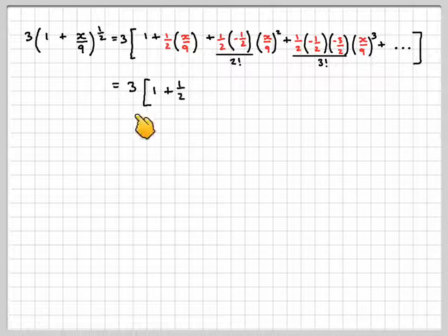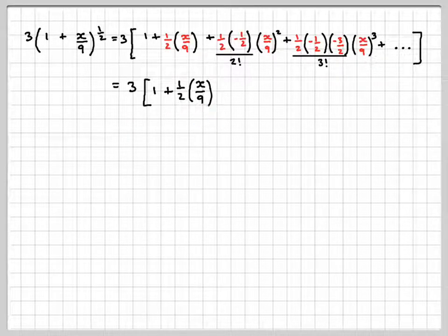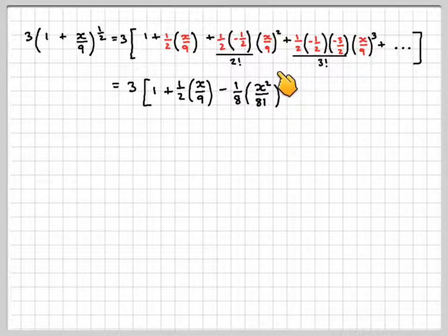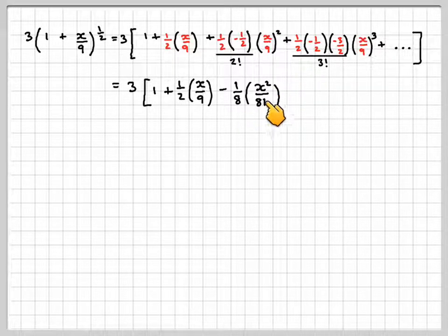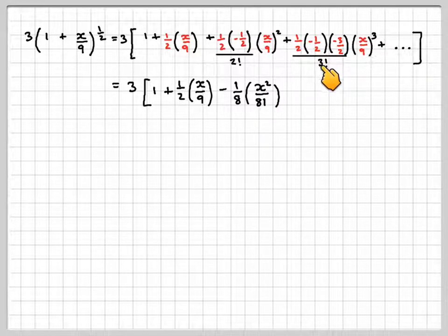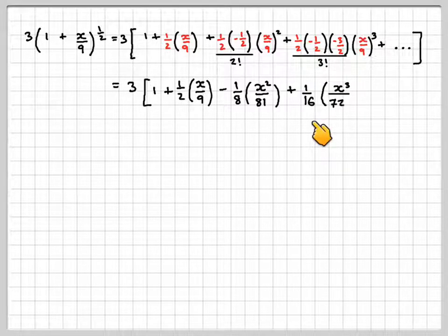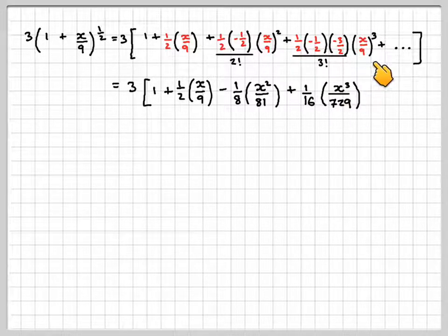Okay, so we've still got that 3, 1, we leave that the same. Now, a half times minus a half divided by 2 factorial is minus 1 eighth. Here, x over 9 all squared becomes x squared over 81. A half times minus a half times minus 3 over 2 over 3 factorial becomes 1 sixteenth, and this will become x cubed over 729.